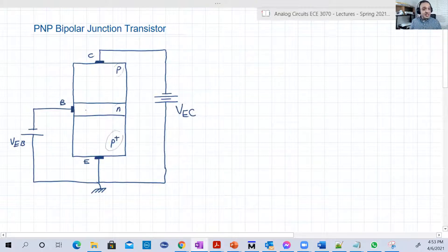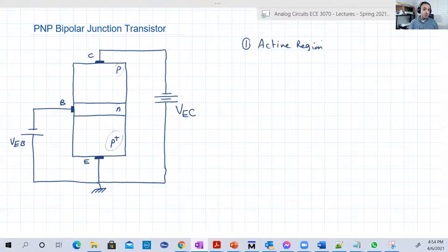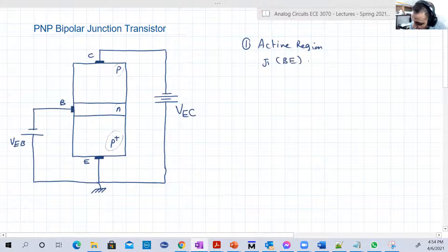So basically it's the same operation. Let's explore the operation, for example, in the active region. So in the active region, again, we want J1 to be forward, the junction between the base and the emitter. And we want the junction between the collector and the base to be reversed. So J1 between base and emitter should be forward and on. J2 between base and collector should be off.